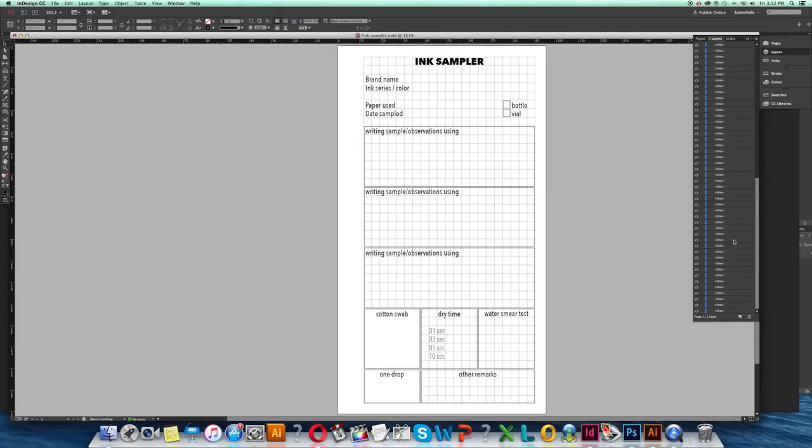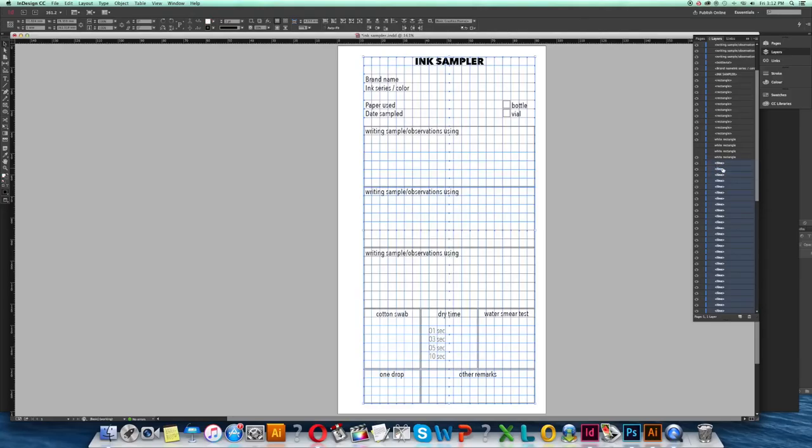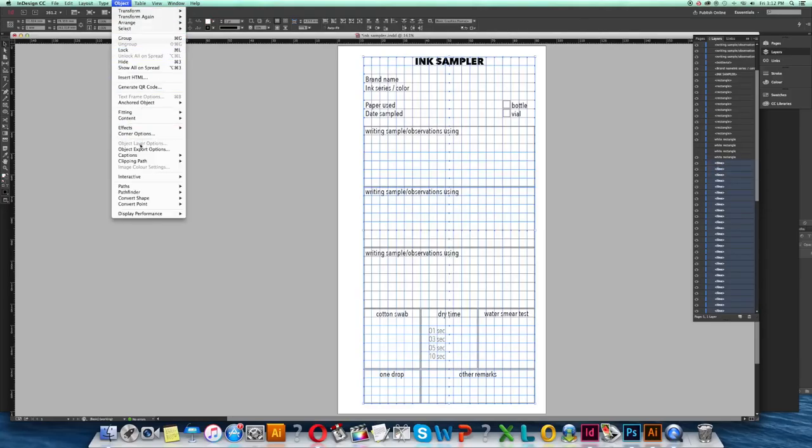I also placed a grid in the pages for the ink sampler book because I'm going to be writing sentences on them and I need the grid for that. However, in the area for the cotton swab and the one drop I did not place a grid.